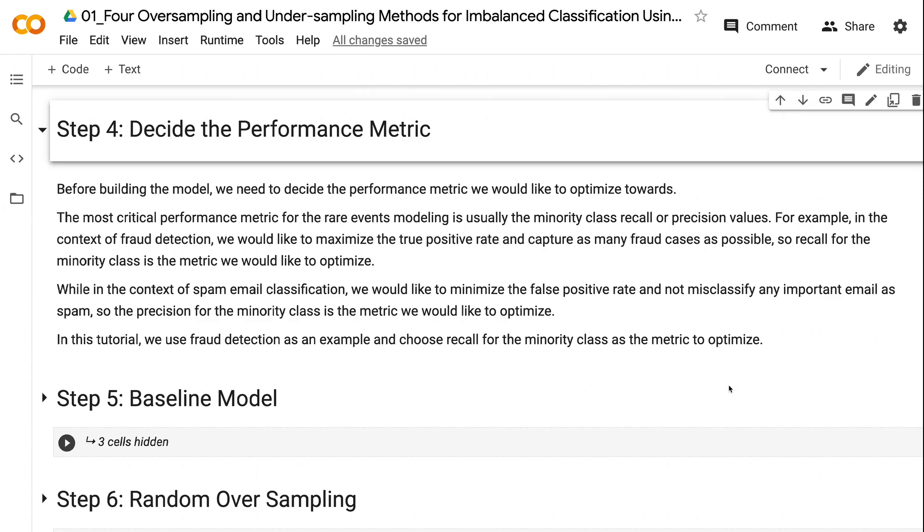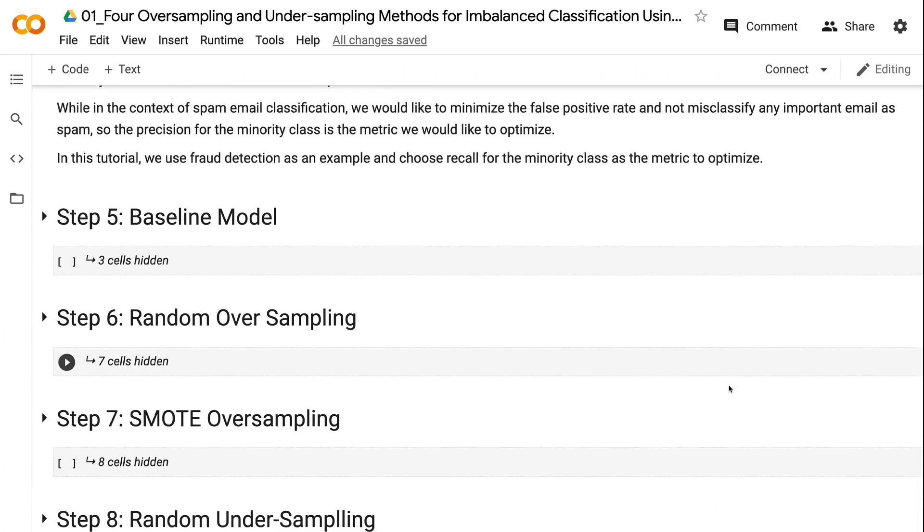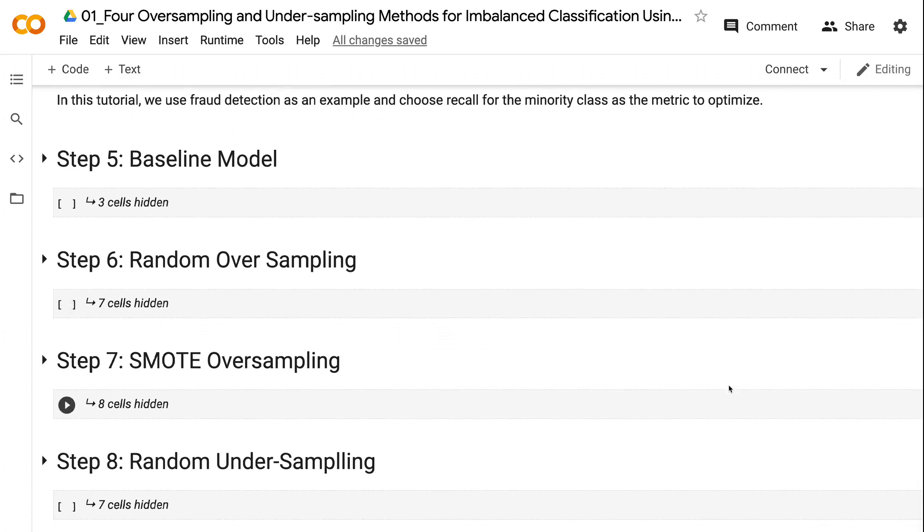While in the context of spam email classification, we would like to minimize the false positive rate and not misclassify any important email as spam. So the precision for the minority class is the metric we would like to optimize. In this tutorial, we use fraud detection as an example and choose recall for the minority class as the metric to optimize.